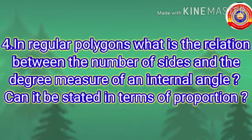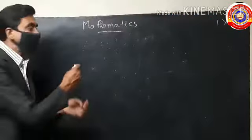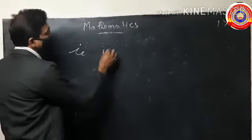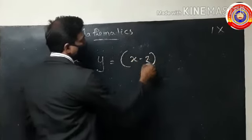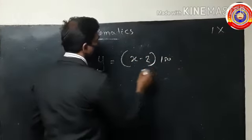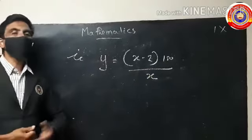In the fourth question, we have to express the relation between the number of sides and internal angles of a regular polygon in terms of a proportion. Take the number of sides as x and the measure of an internal angle as y. Then y = (x − 2) × 180 / x. This relation cannot be stated in terms of proportion.